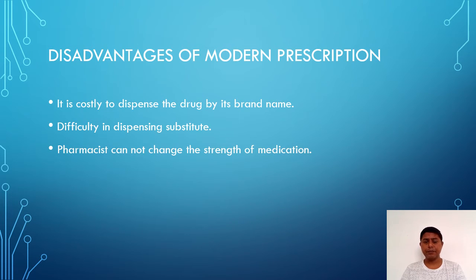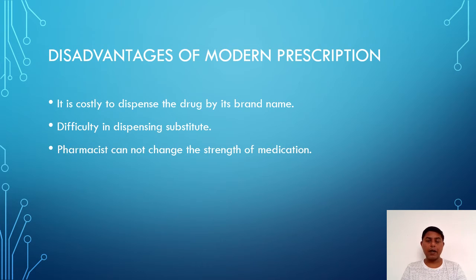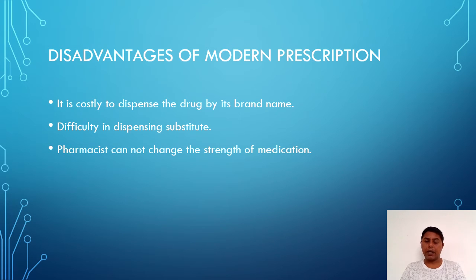It is difficult to dispense a substitute because if the prescriber has mentioned a particular brand of drug to be dispensed, it is very difficult at the pharmacist level to dispense a substitute unless consulted with the prescriber. Additionally, a pharmacist cannot change the strength of medications. Whatever strength is available with the drug must be dispensed. A pharmacist cannot independently change the strength, whereas in Latin prescriptions there was a compounding and dispensing aspect where formulations could be prepared with changes in strength, which is not possible with the readymade forms of formulations nowadays.